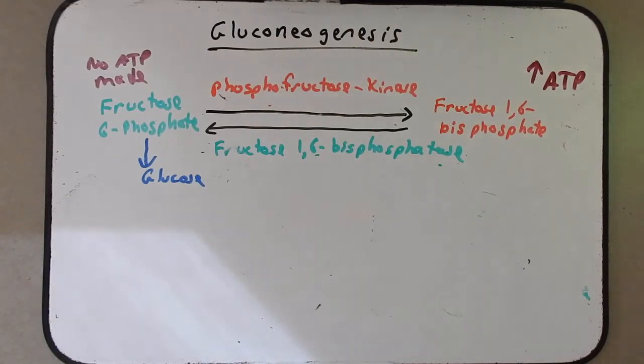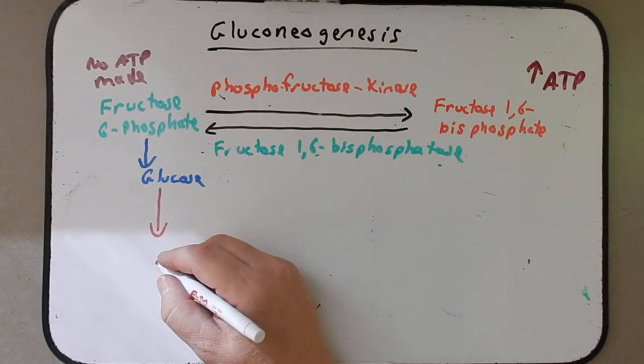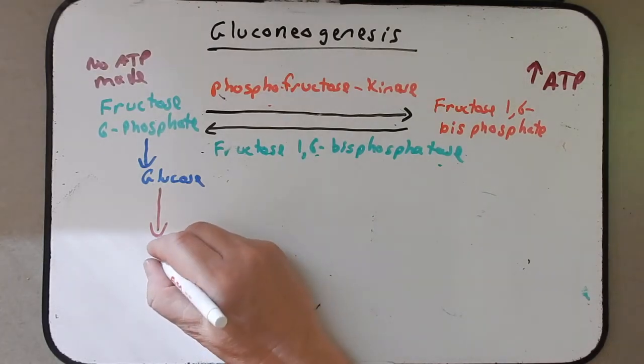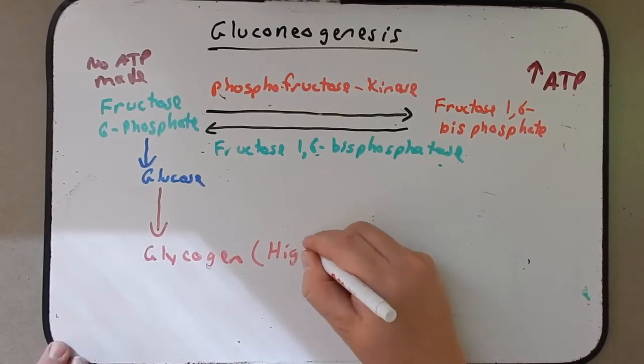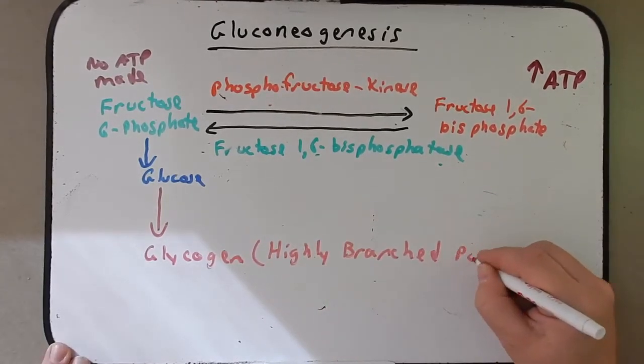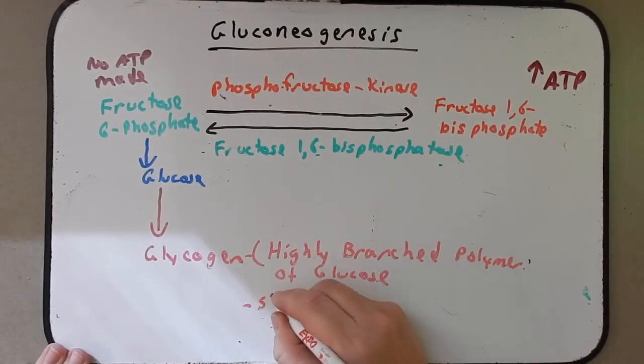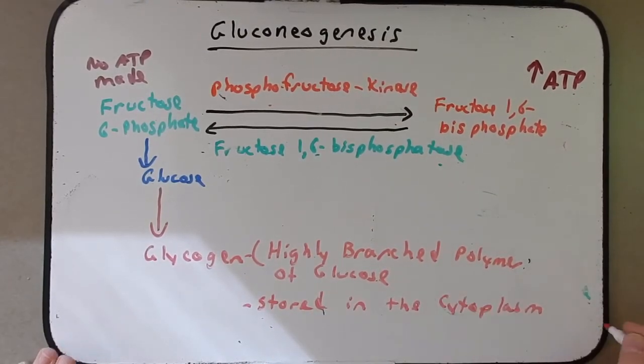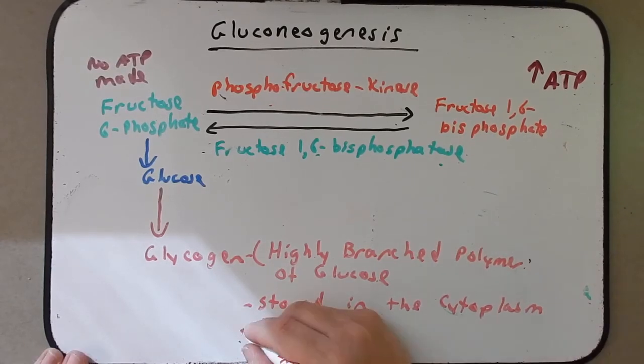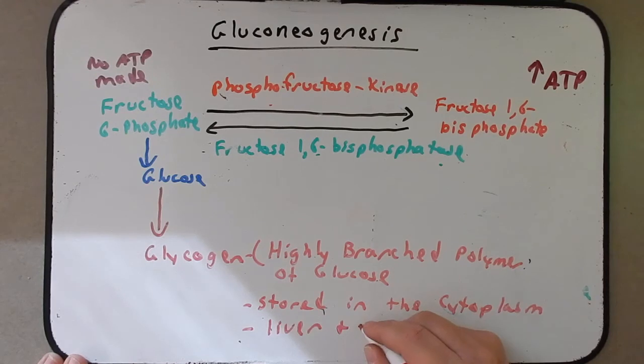However, there aren't large stores of glucose existing in our cells as a monosaccharide all by themselves. Rather, what happens is glucose forms this highly branched polymer known as glycogen. So I'll write that here, highly branched polymer fiber of glucose. Glycogen is stored in the cytoplasm. It's stored in the cytoplasm of many cells, but we see large concentrations of glycogen in the liver and muscles.